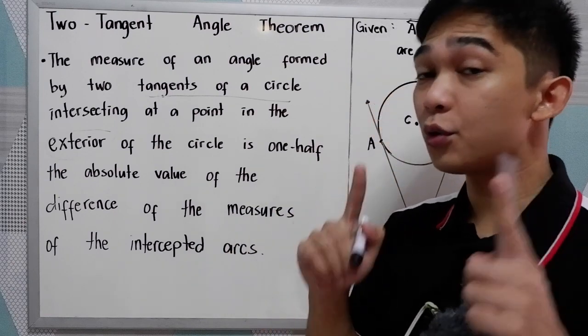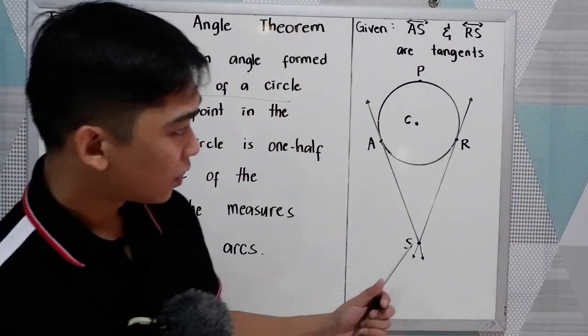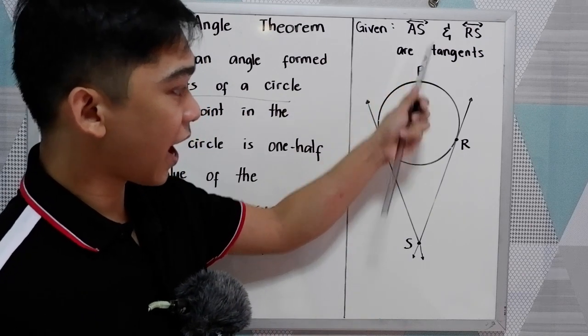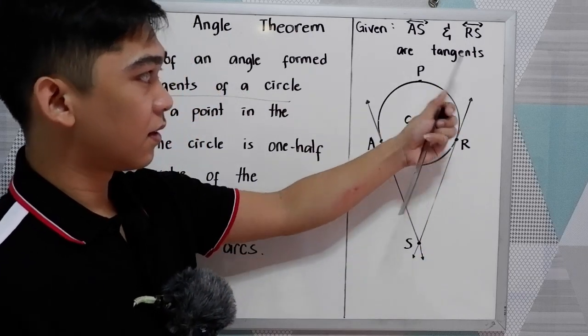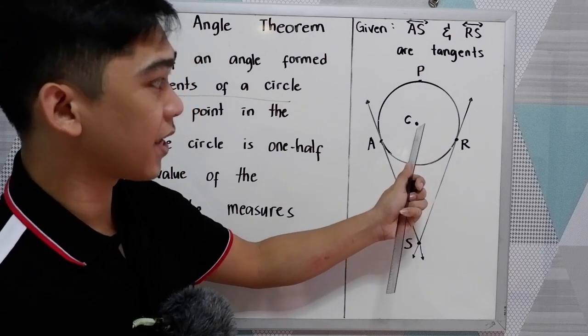So we have two tangents, so we're going to use this illustration. We have the given tangent AS and tangent RS. So we have a circle C, so they are tangent at circle C.